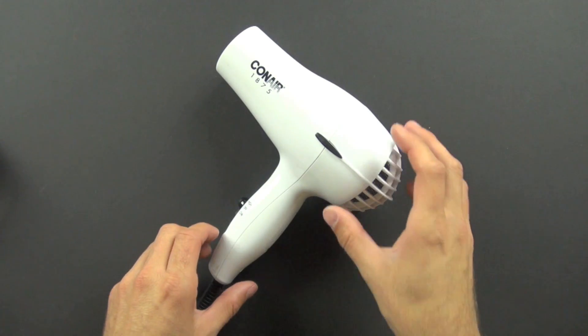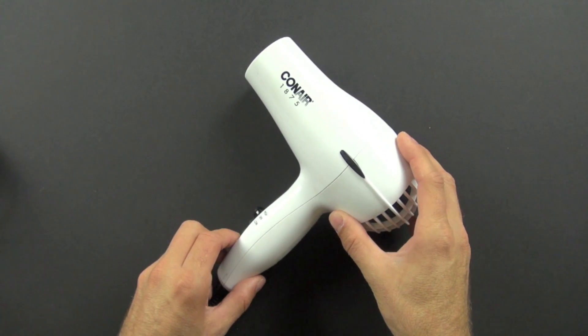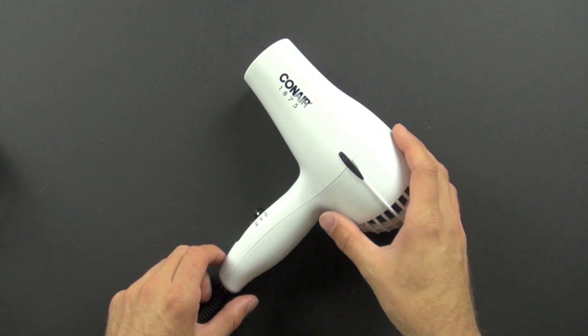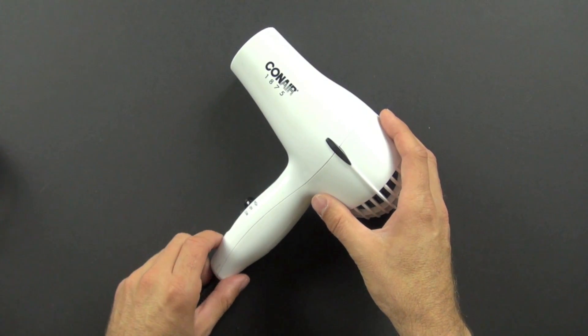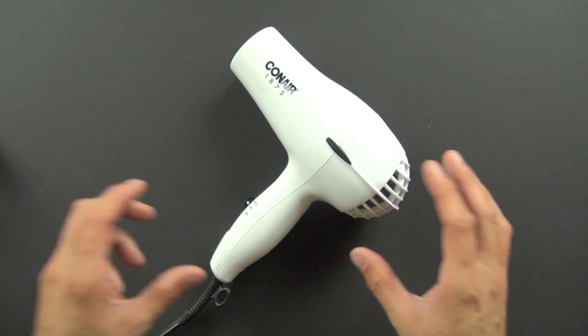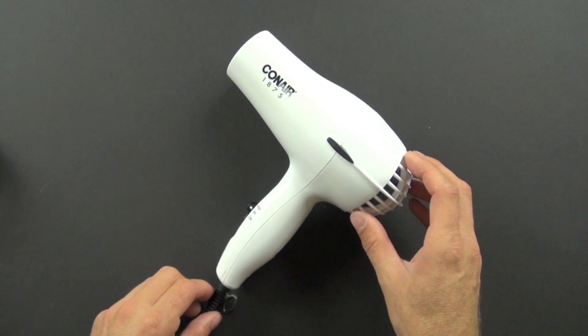We're also going to take a look at how they were able to produce a hair dryer for less than $8 and still make a profit, still stay in business as a company, because that's a very low price. The way they've done that is they've reduced a lot of cost and complexity, and we'll take a look at how they've done that.